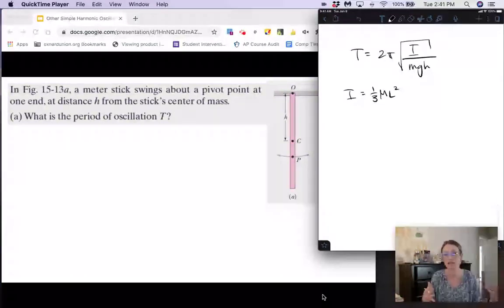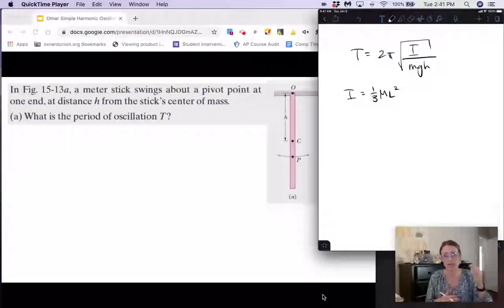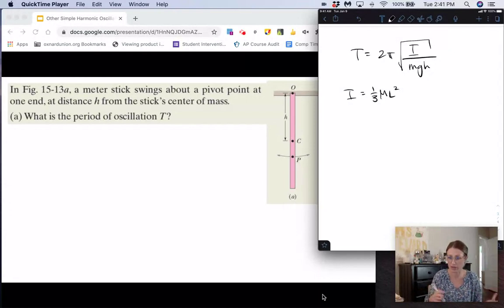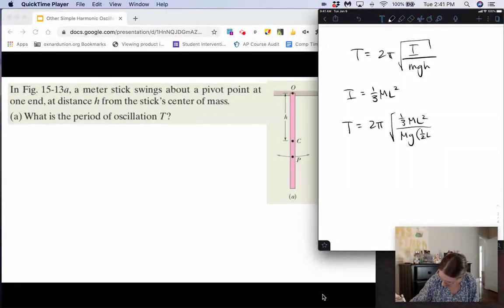assuming that this meter stick is uniform, then our h will be the distance from the center of mass to the end, which is just going to be half a meter. So we're going to plug that stuff in, we get period is equal to 2π times the square root of rotational inertia, which is one-third mL squared over mgh, which is one-half of L.